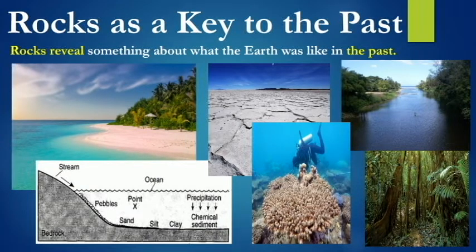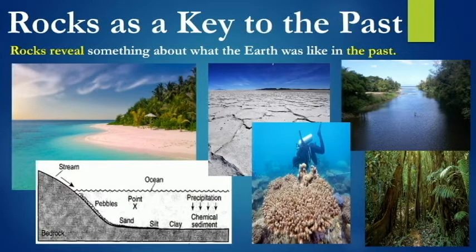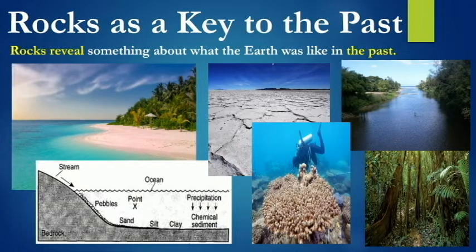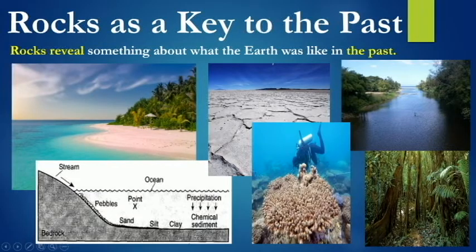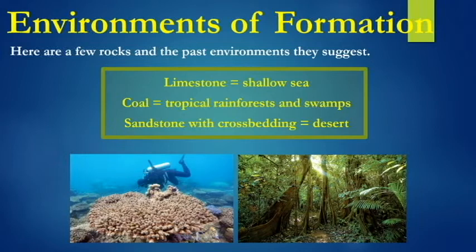Something to know about sedimentary rocks in particular — rocks in general reveal the past. That's one reason why they're studied: they tell us something about what the earth was like in the past. The father of geology, James Hutton, in the mid to late 1800s, coined the term that the present is the key to the past. What he meant was that what we see happening in the present — the rocks we see in the present — are revealing something about what the past was like. This present beach environment, coral reefs, or this forest — that's what the present looks like, but the rocks can tell us something about what was going on in the past.